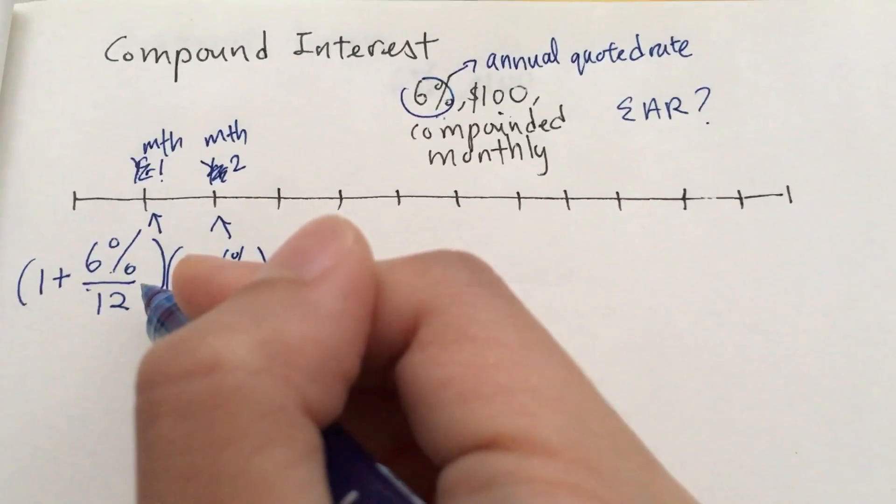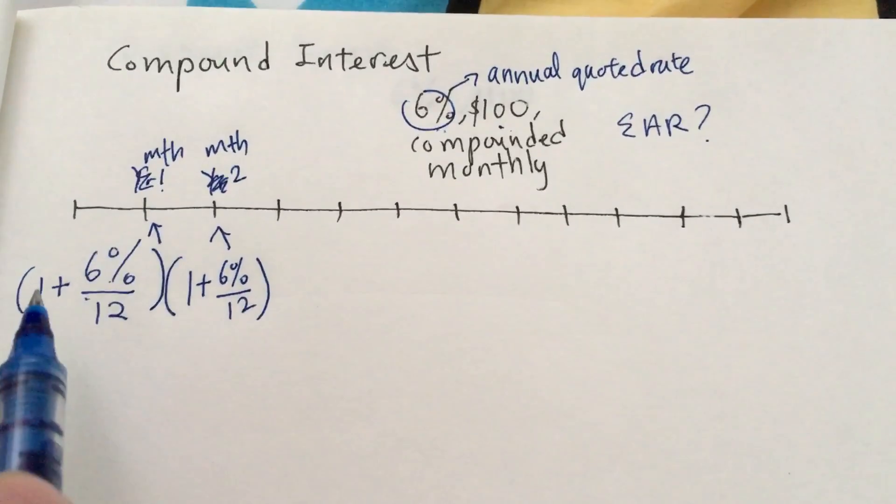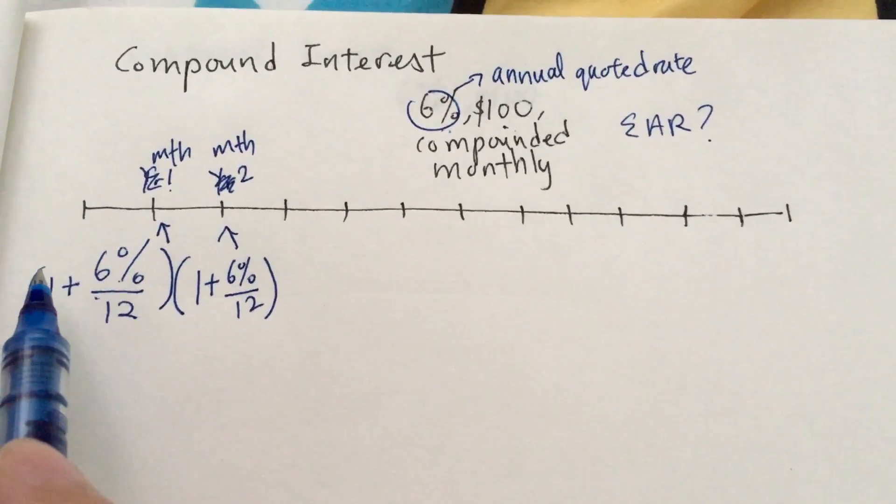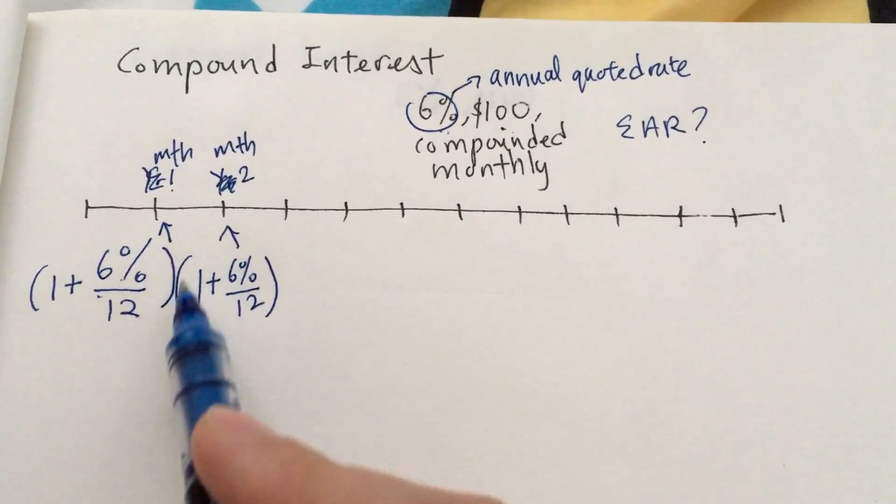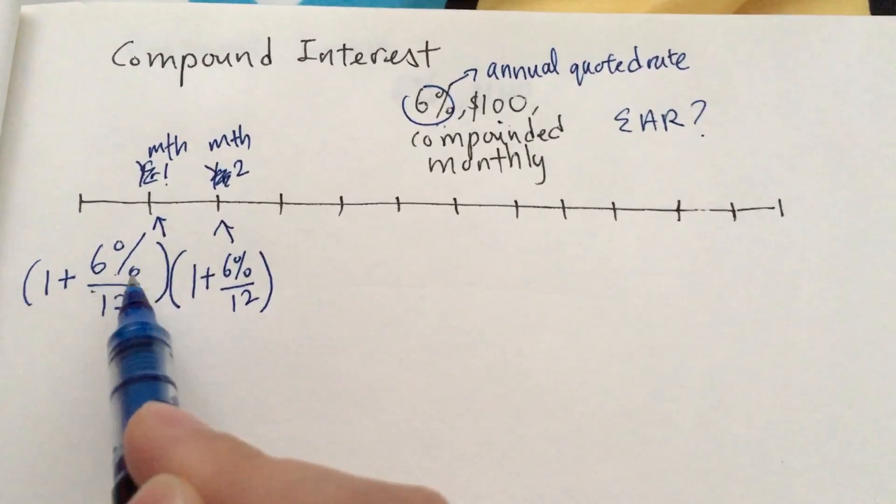However, you have to remember that it's compounded monthly. So the first month, what you're really getting is an interest multiplication of the entire principal by 1 plus 6% divided by 12.